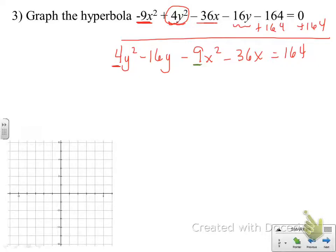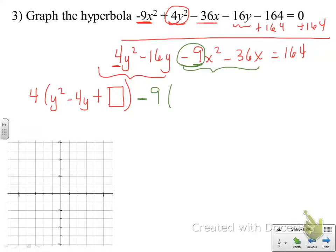So for the y terms, I'm going to factor out that 4, and I'm going to have leftovers of y squared minus 4y. And I'll find the number to complete the square for the y terms. For the x terms, now, when I take that coefficient out of the second variable, I always want to take it out as a negative number. That's where my subtraction is going to come from. So I'm factoring out a negative 9 from the x terms. That's going to leave me with leftovers of x squared plus 4x. And I'll find the number to complete the square for the x terms.